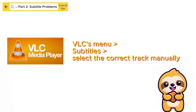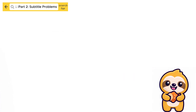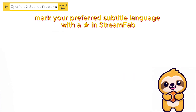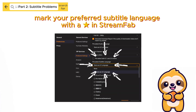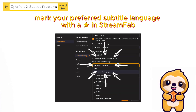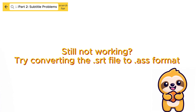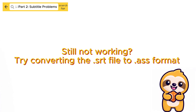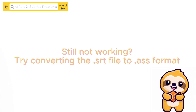To improve the chances of subtitles appearing correctly during playback, you can mark your preferred subtitle language with a star in StreamFab before starting the download. If playback issues persist even after selecting the correct track, consider converting the SRT file into ASS format, which tends to offer better compatibility with certain players and rendering engines.